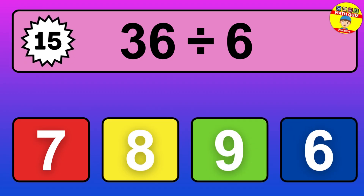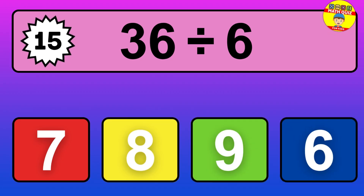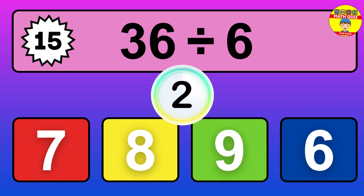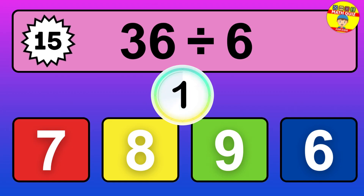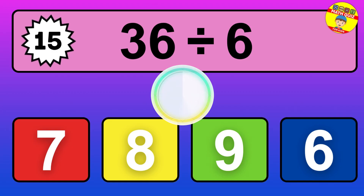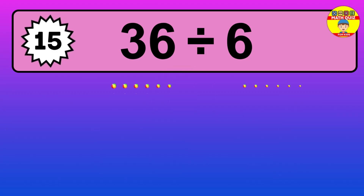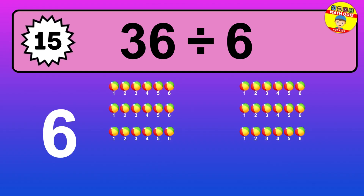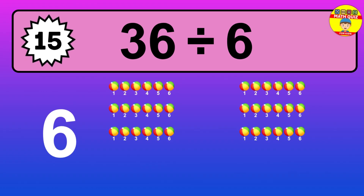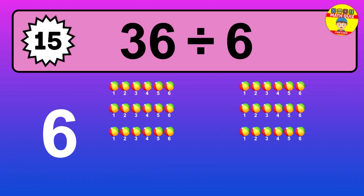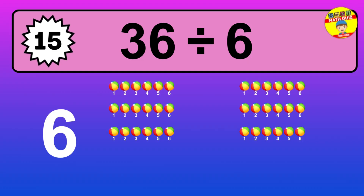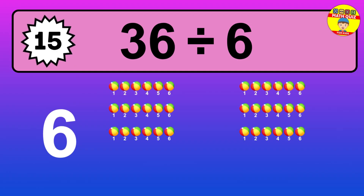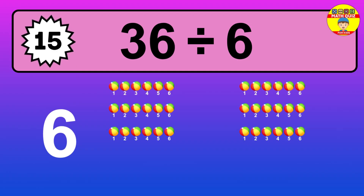36 divided by 6 — it's time to think. Let's go to the solution. Divide the number 36 by 6. Each group contains 6 units, so dividing 36 by 6 results in 6 equal groups. Thus, the result is 36 divided by 6 equals 6.